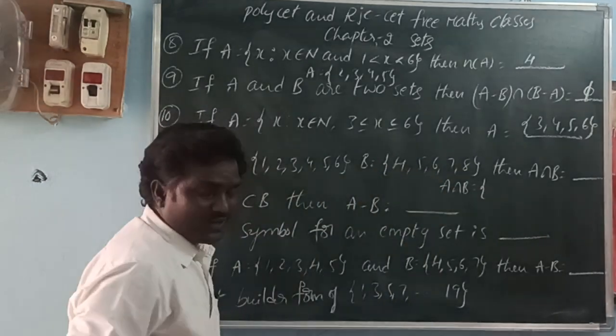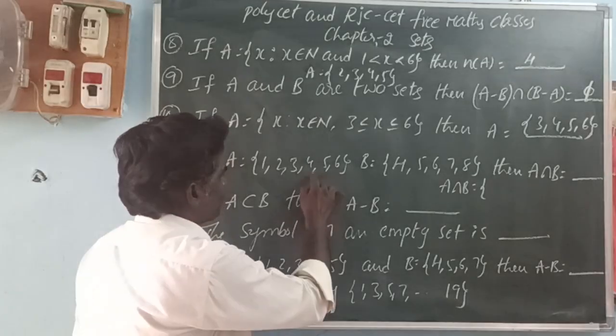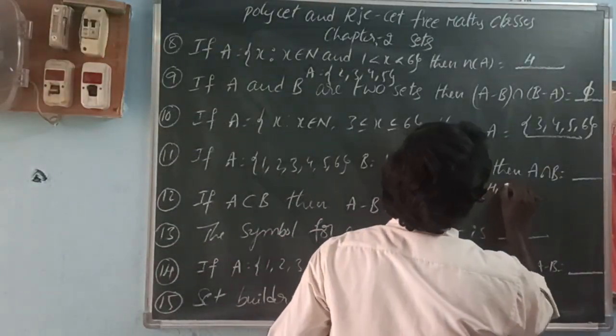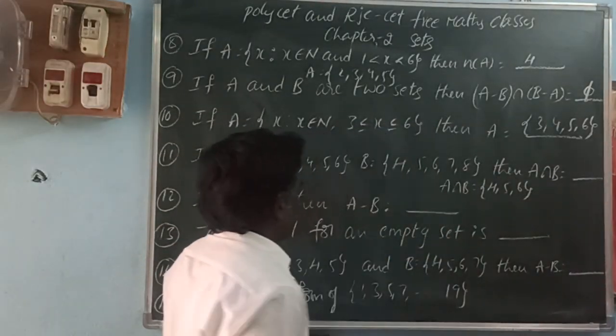In these two sets, the common elements are 4, 5, 6. So A intersection B equals {4, 5, 6}.